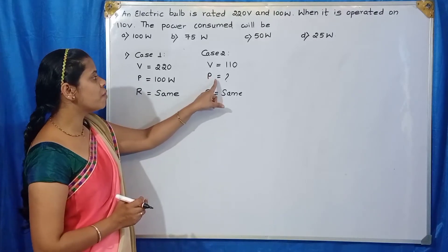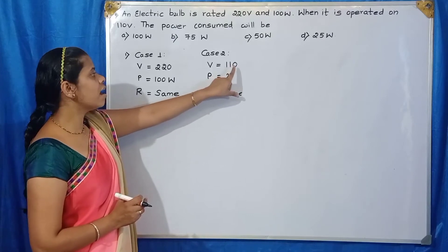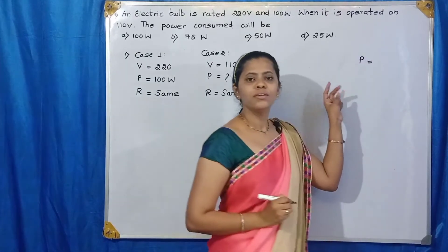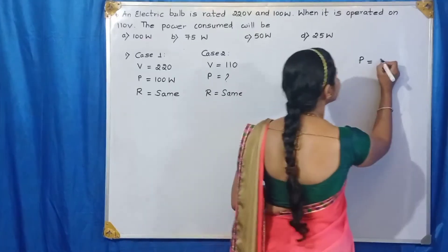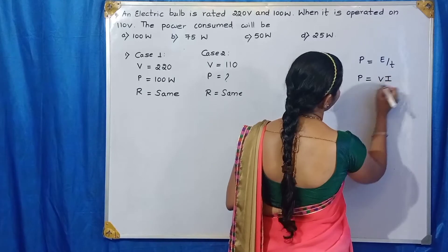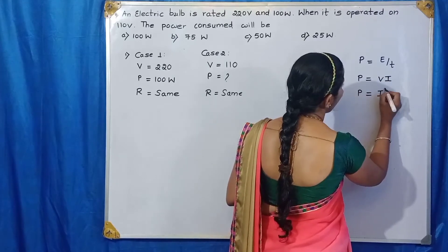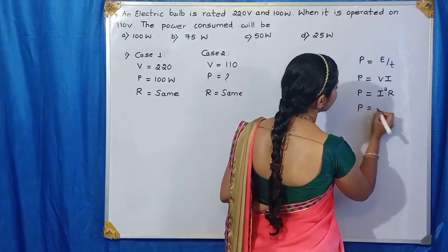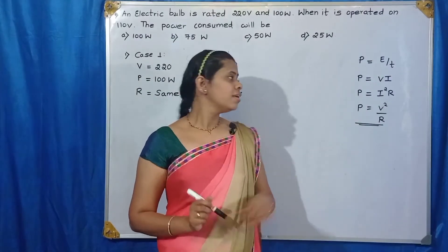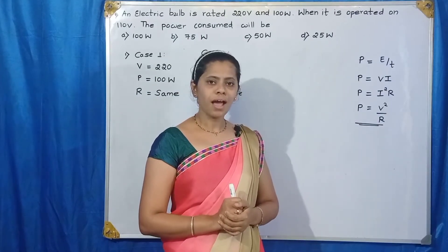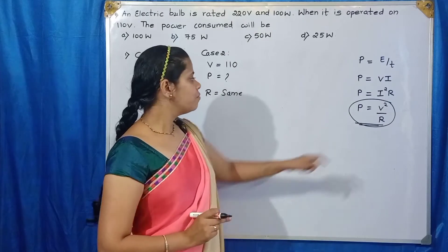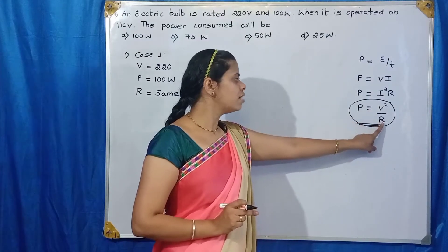We have to find out the power consumption when it is connected to 110V. We have 4 formulas to find the power consumption: P = E/T, P = VI, P = I²R, and P = V²/R. We have to use this fourth formula: P = V² divided by R.